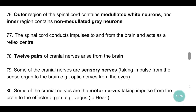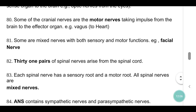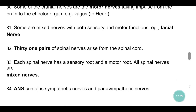12 pairs of cranial nerves arise from the brain. Some cranial nerves are sensory nerves taking impulses from the sense organs to the brain. Some are motor nerves taking impulses from the brain to the effector organ — for example, the vagus nerve to the heart. Some are mixed nerves with both sensory and motor functions — for example, the facial nerve. 31 pairs of spinal nerves arise from the spinal cord. Each spinal nerve has a sensory root and a motor root, and all spinal nerves are mixed nerves. The Autonomic Nervous System (ANS) contains sympathetic nerves and parasympathetic nerves.